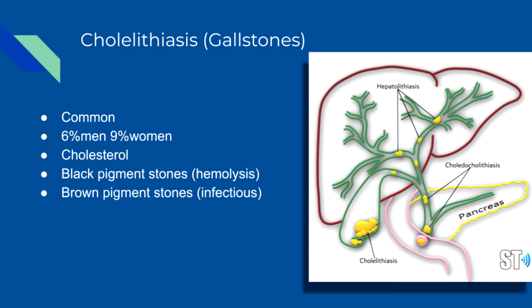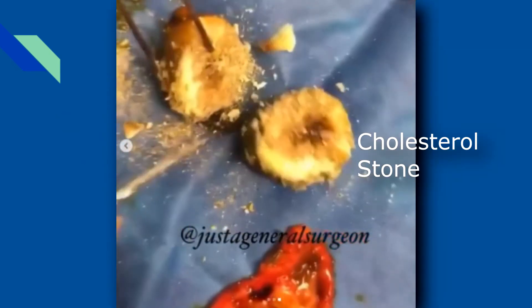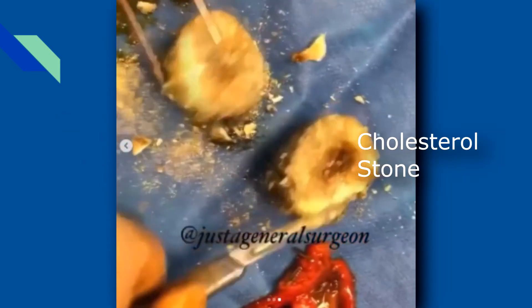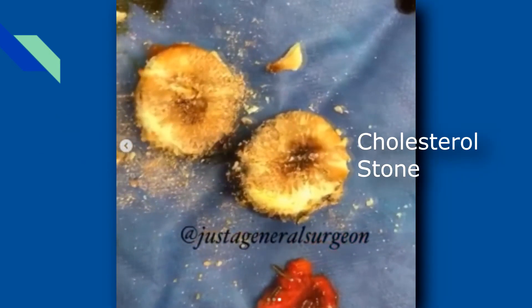Gallstones can be found in children, though it is less common. There are even cases of gallstones in utero. Pediatric patients who have hemolytic anemia, such as sickle cell disease or spherocytosis, have an increased risk of developing gallstones, particularly bilirubin stones, from the breakdown of red blood cells.